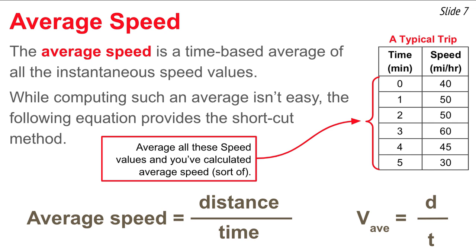To find the average speed, rather than averaging all those instantaneous speed values, we can simply take the total distance traveled and divide it by the total time of travel. You can see the equation on the slide. Another way to write it is the shorthand symbolic version: V-av equals D divided by T, where D stands for distance and T stands for time. That's known as the average speed equation — you'll probably use it a lot in physics.